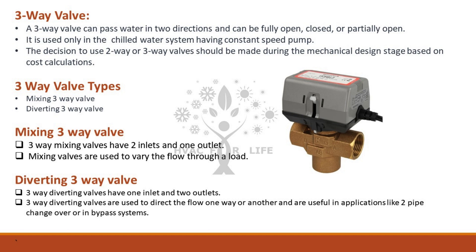Three-way valve types include the mixing three-way valve and the diverting three-way valve. Mixing three-way valves have two inlets and one outlet and are used to vary the flow through a load. Diverting three-way valves have one inlet and two outlets and are used to direct flow one way or another, useful in applications like pipe changeover or bypass systems.